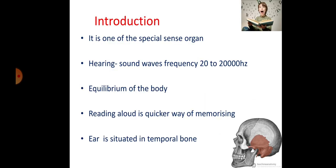The ear is one of the special sense organs designed for hearing and equilibrium of the body. The ear is divided into three parts: external ear, middle ear, and internal ear. The internal ear has two parts — the vestibular and semicircular part, and the cochlear part. The cochlear part is related to hearing, and the vestibular and semicircular part is related to equilibrium of the body.